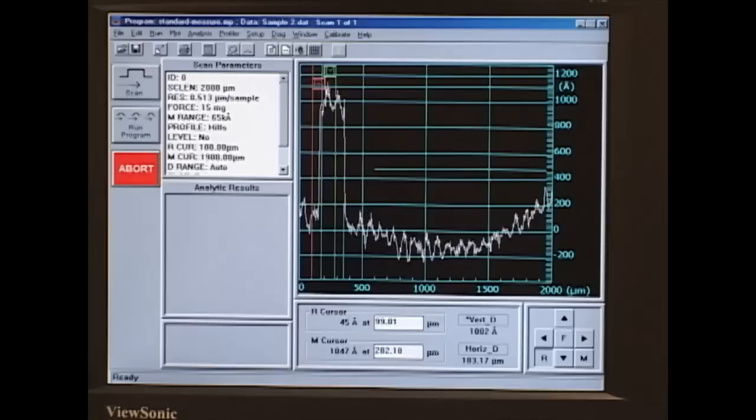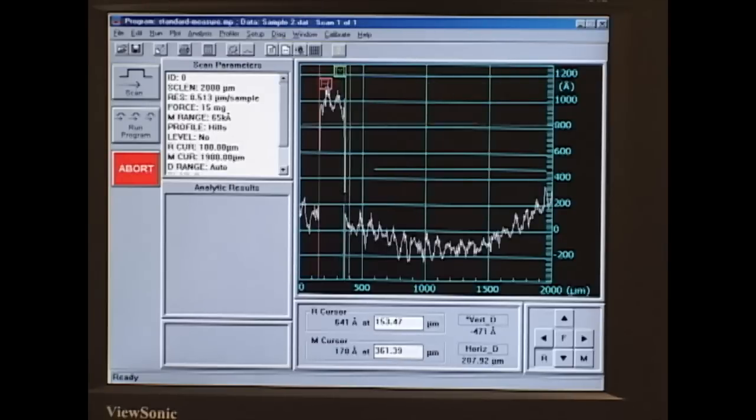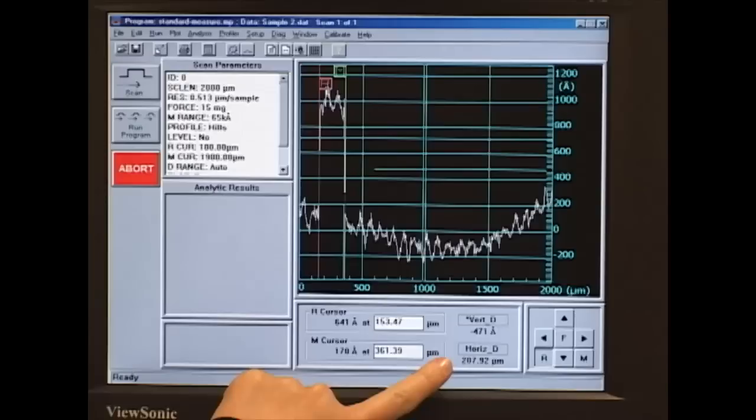We can also measure the width of our feature. We move the R line and the M lines just to the edges of our feature. We'll see the horizontal distance between them is about 208 microns.